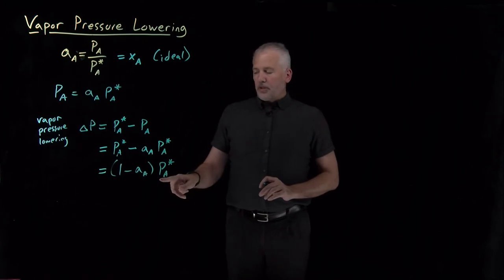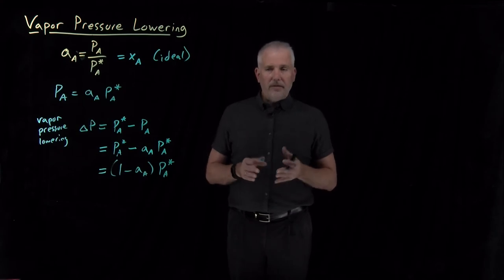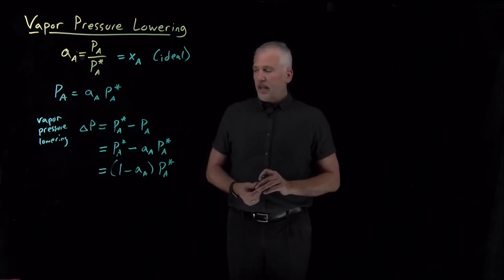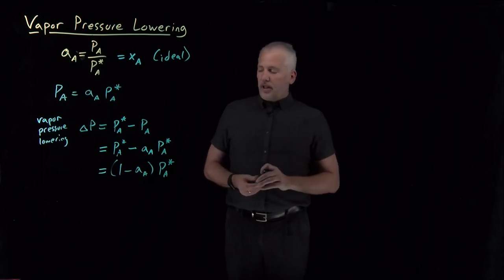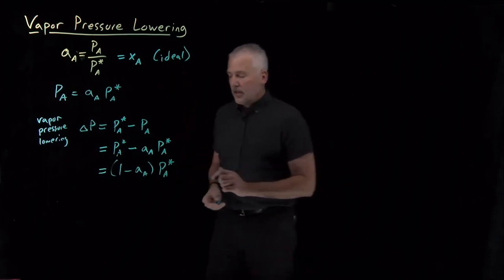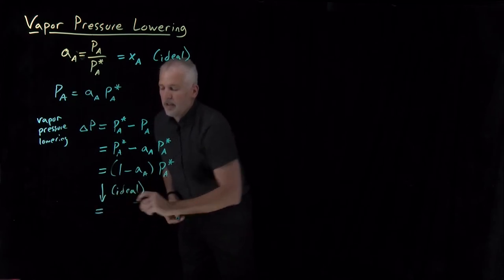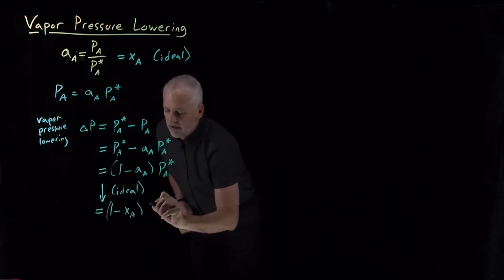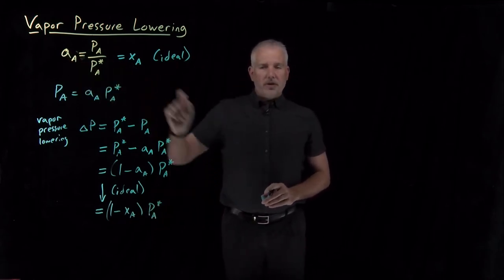That's the amount by which the vapor pressure is lowered. For a dilute solution — meaning very little solute and nearly 100% solvent — the activity is going to be close to 1, and this difference will be pretty small. In fact, a solution dilute in solute and nearly pure in solvent will be close to ideal. If we assume it's an ideal solution, then we can write (1 minus activity) as (1 minus mole fraction), because in an ideal solution activity and mole fraction are the same thing.